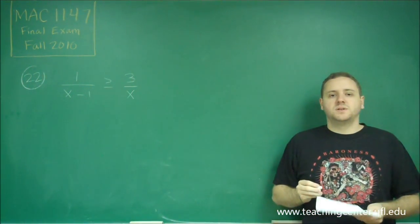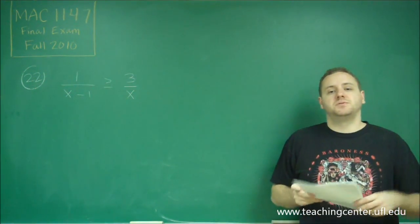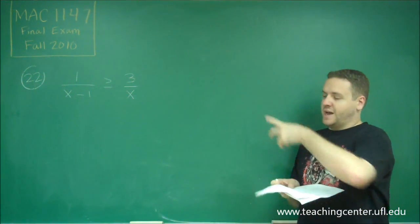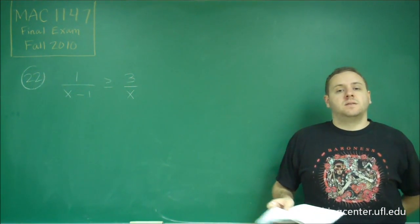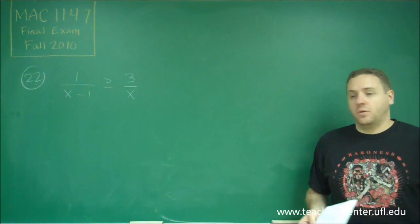What's important to note here is that you can't cross multiply when you're dealing with inequalities because you don't know if x or x minus 1 is negative or positive, and that would change the inequality sign. So you can't multiply both sides by a variable.